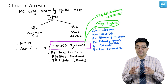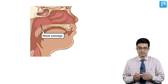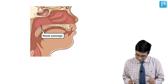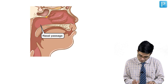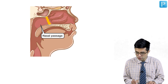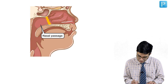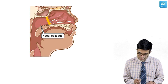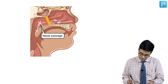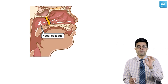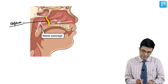In choanal atresia, if we look at the nasal cavity, children will have a septum present that creates a septal block, occluding the lumen so that air moving through the nasal passage cannot pass through. There will be no airflow occurring across this point. This septum is responsible for producing choanal atresia.